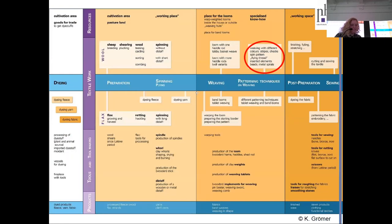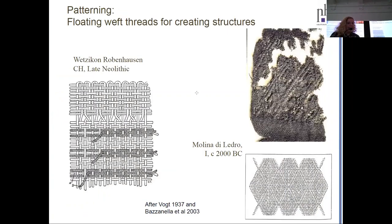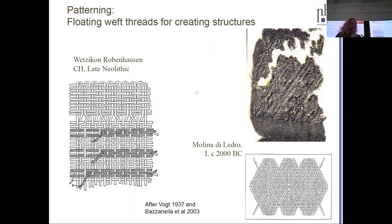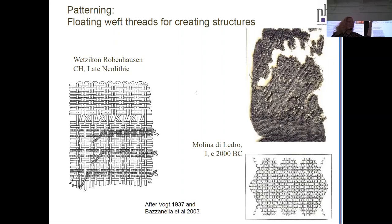Coming to the patterning techniques, which are really important because they also give some interesting designs: what we have in the Late Neolithic are floating weft principles. The Molina di Lero band really shows lozenges and things like that, but it is not made as a programmed weave like twill — it is made inserted by hand. These things are really singular. We have one of this, one of that, and a lot of plain tabby woven items that have no pattern at all.